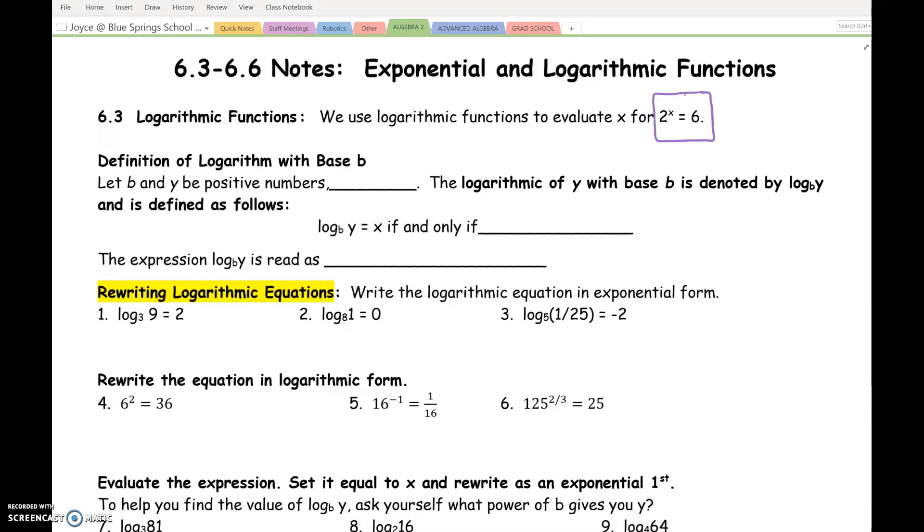if this was x squared, we could square root it. If it was x to the 4th, we could take the 4th root. If it was 2 times x, we could divide by 2. But how do you undo an exponent of x? We've never had a way to do that before.